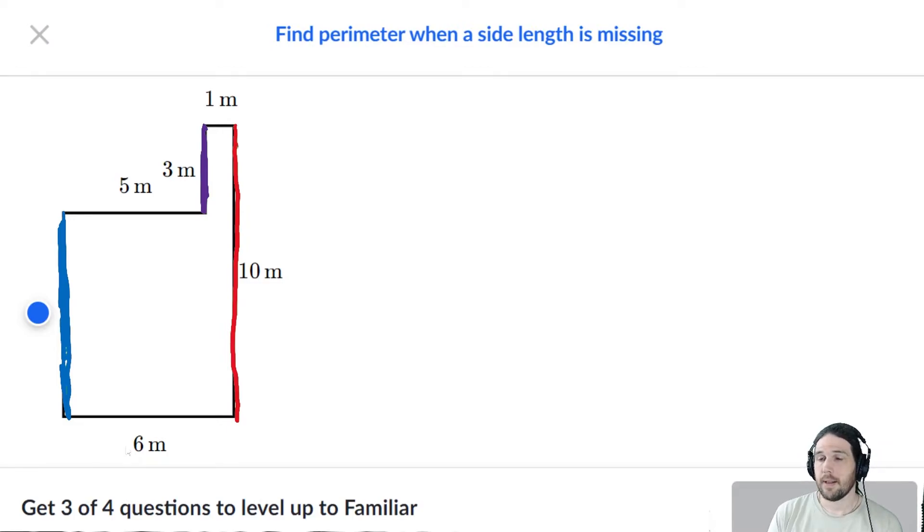Again, the 10 is working as the biggest number because it is the total length. You subtract the three meters that you already know, and that gives you seven meters for that side. And now we can add this up.